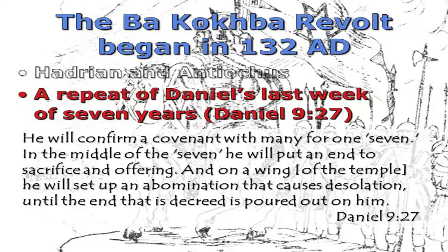This passage from Daniel 9 is exactly the experience of Antiochus Epiphanes and exactly the experience of Emperor Hadrian: 'He will confirm a covenant with many for one seven, and in the middle of the seven he will put an end to sacrifice and offering, and on the wing of the temple he will set up an abomination that causes desolation, until the end that is decreed is poured out on him.' It's a complete rerun of this prophecy. Jesus says: 'When you see the abomination that causes desolation spoken of through the prophet Daniel — let the reader understand — then let those who are in Judea flee to the mountains.'